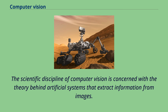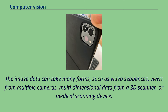The scientific discipline of computer vision is concerned with the theory behind artificial systems that extract information from images. The image data can take many forms, such as video sequences, views from multiple cameras, multidimensional data from a 3D scanner, or medical scanning device.